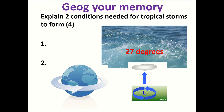It is asking you for two conditions in your answer, and it is for the formation of our storms. It's a four-mark answer, which means that because they are requiring two conditions, you need to make two separate points and explain both of those separate points.